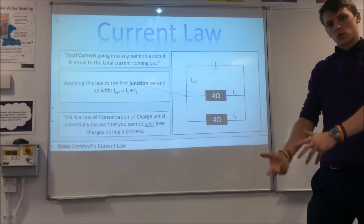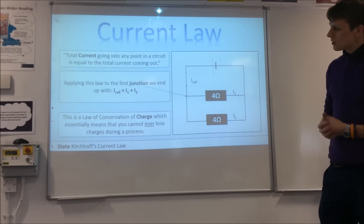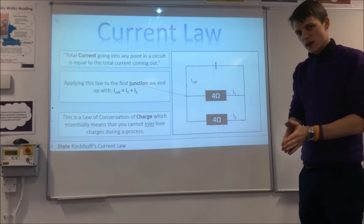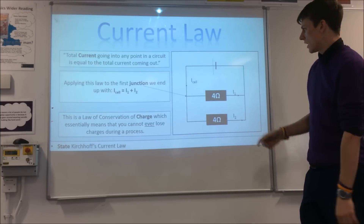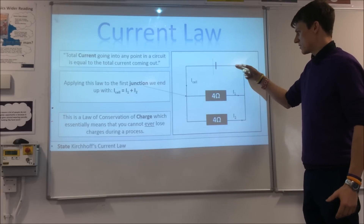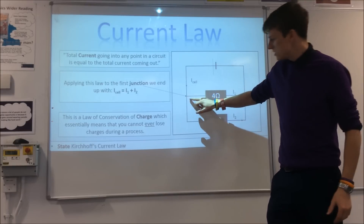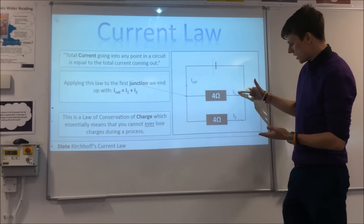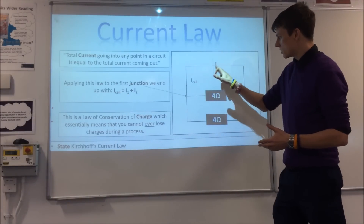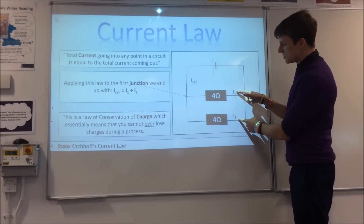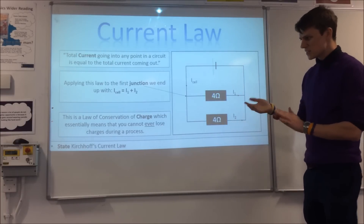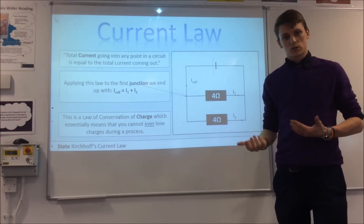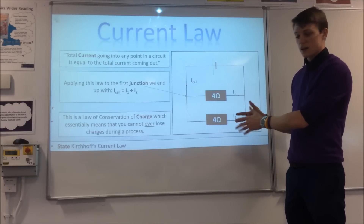Now we're going to look at the current and voltage laws that apply to circuits, starting with the current law. Kirchhoff's current law states that at any point in your circuit, the total current going into that point must equal the total current coming out. The most interesting places are junctions: the currents I1 and I2 coming out must add together to give the current coming from your cell. This is an application of the law of conservation of charge, which you'll also encounter in the particle physics part of the course.